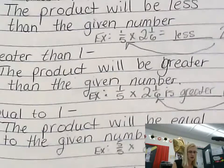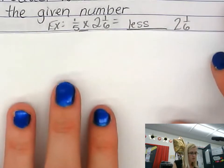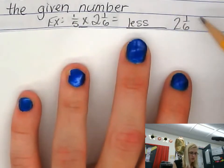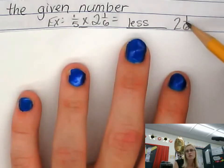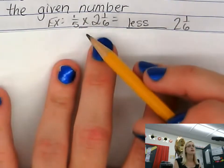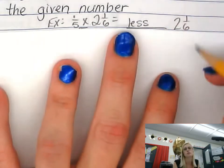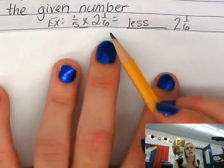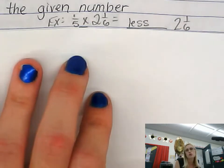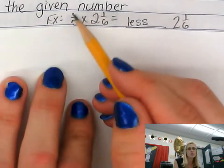Here's an example. We have 1 and 1/5th times 2 and 1/6th. Is that less than or greater than 2 and 1/6th? The given number I'm comparing against is 2 and 1/6th, and the other factor is 1/5th. Since 1/5th is less than 1 whole, the product is going to be less than 2 and 1/6th. If I take 2 and 1/6th, draw a model, and cut it into fifths, I'm only keeping 1 of those fifths — just part of what I started with. That's why the answer is less than.